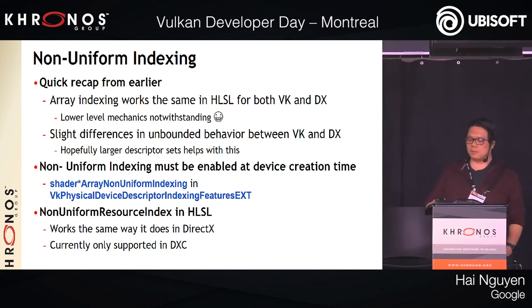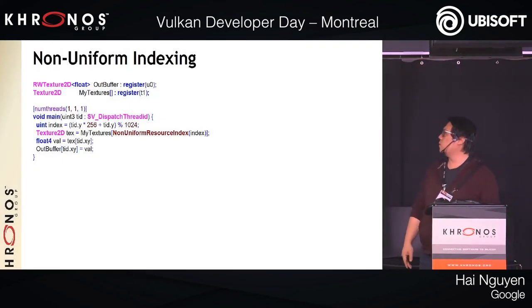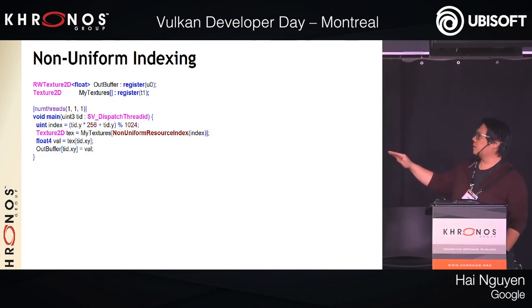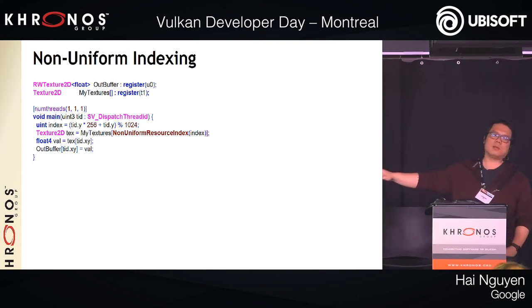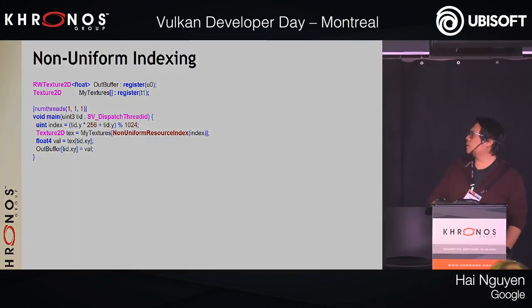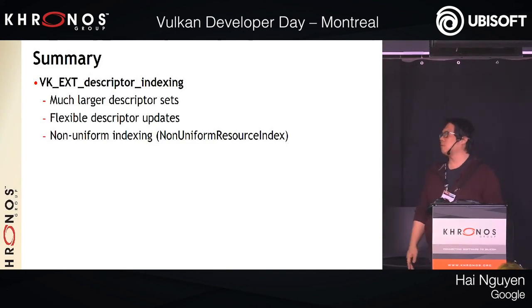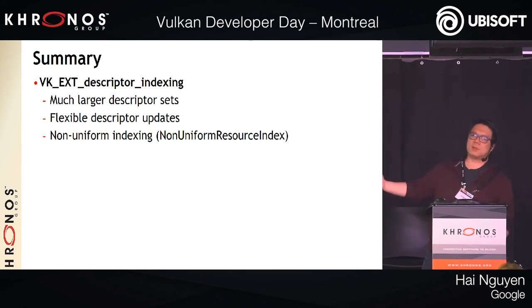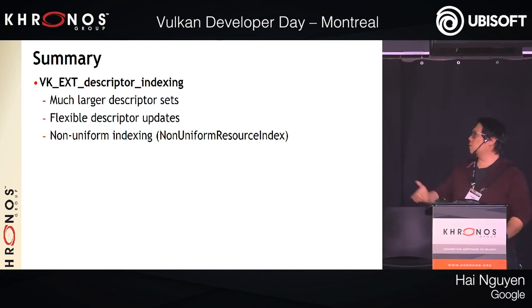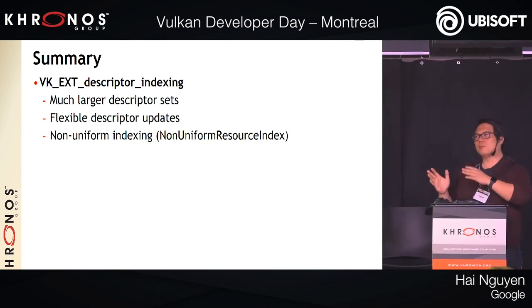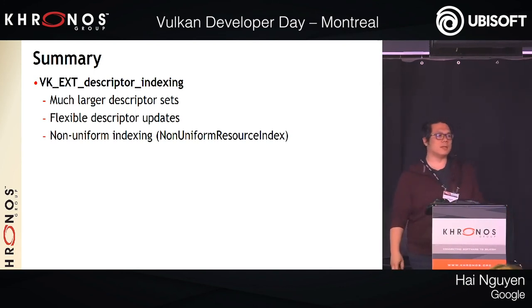Here's a pathological case of what non-uniform indexing looks like in HLSL. The SPIR-V for it was longer than expected and completely incomprehensible, so I'll spare you. Key takeaways: you can have much larger descriptor sets, updating has become more flexible and more akin to other APIs, and non-uniform resource indexing is available for specific cases where you need to index non-uniformly. If you don't need that, you may not need to use it.